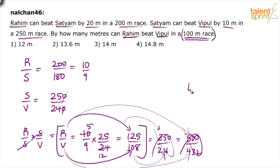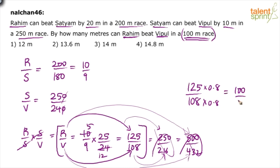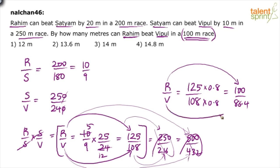What we have now is Raheem by Vipul = 100 by 86.4, which means by the time Raheem covers 100 meters, Vipul will cover only 86.4 meters. So by how many meters is Vipul beaten? 100 minus 86.4 = 13.6 meters. Just as Raheem beats Satyam by 20 meters and Satyam beats Vipul by 10 meters, here Raheem beats Vipul by 13.6 meters — option 2.